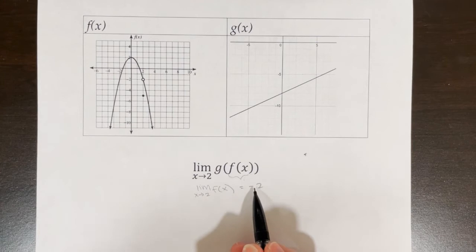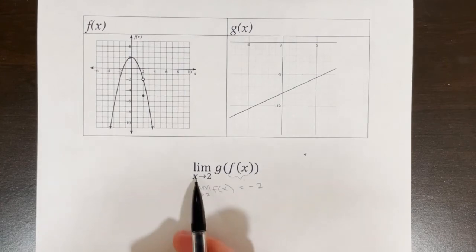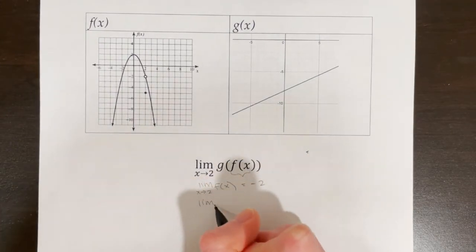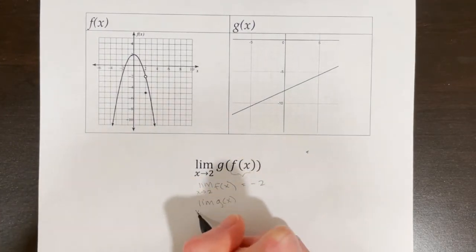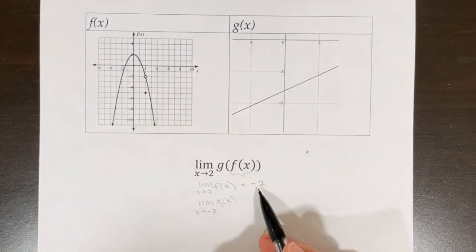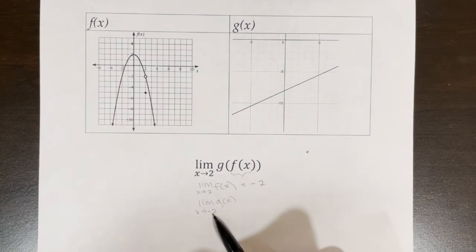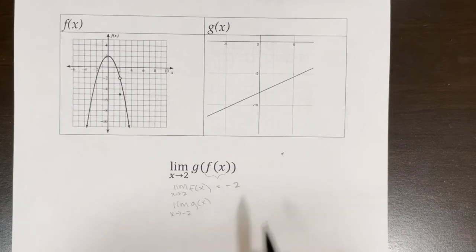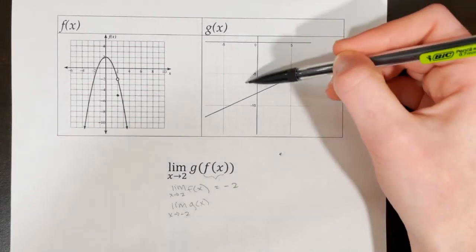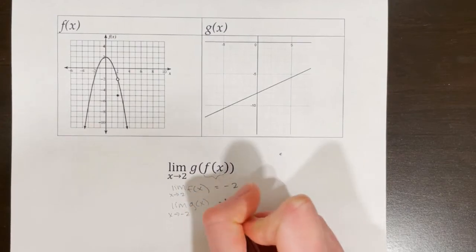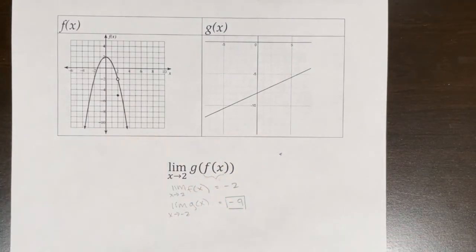This is where it gets a bit challenging. Instead of taking the limit as x goes to 2 of g(x), we need to take the limit of g(x) as x goes to negative 2 — because that's what we just got for the inner function. You take your answer for the innermost limit and use that as your new limit value. The limit of g(x) as x approaches negative 2 is negative 9 according to my graph, so the overall limit is negative 9.